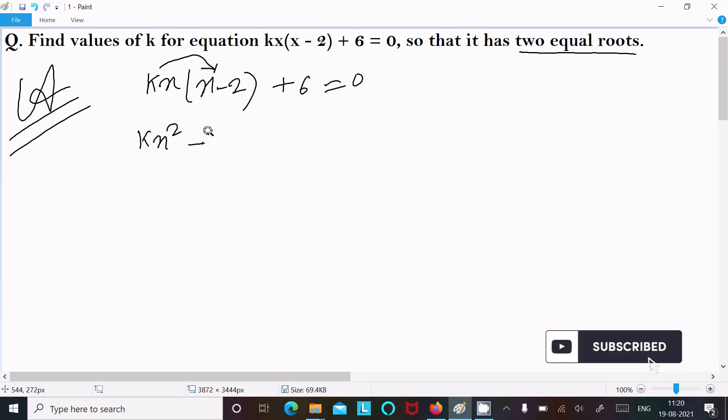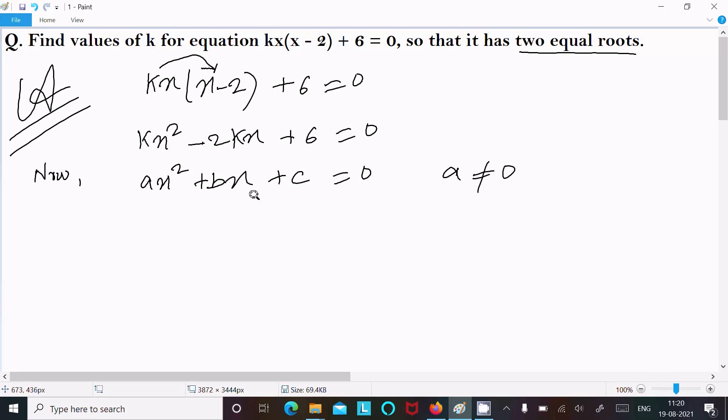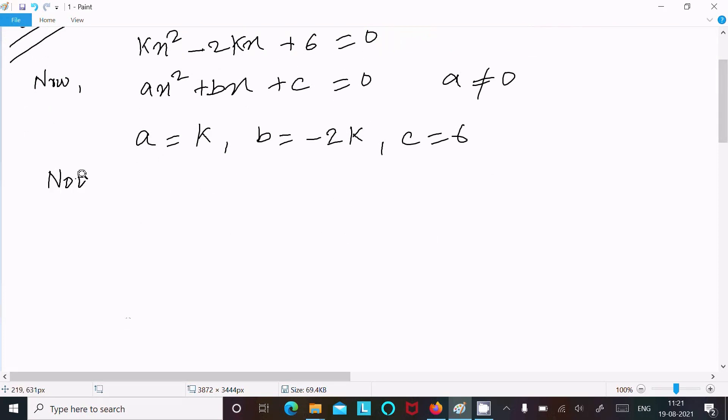Now, I'm going to compare this with the general form of a quadratic equation: ax² + bx + c = 0, where a ≠ 0 (the coefficient of x² cannot be 0). We can identify a = k, b = -2k, and c = 6.